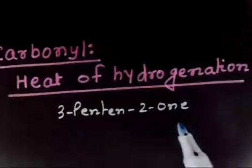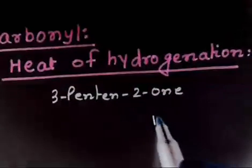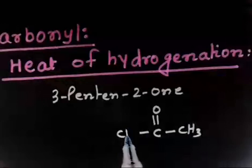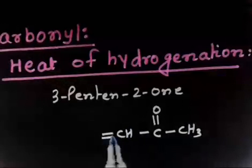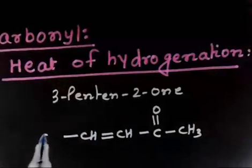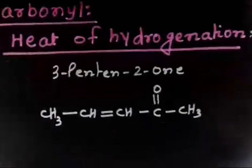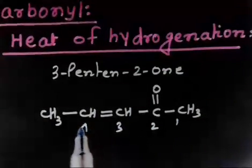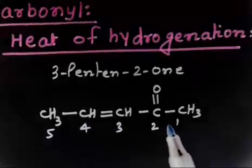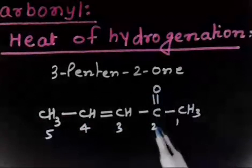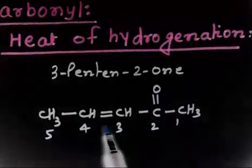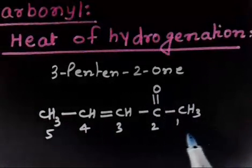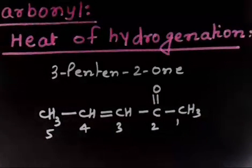Let us write down the structure of 3-pentine-2-one: CH3, C double bond CH, then CO, then CH3. So this is 3-pentine-2-one — carbons 1 through 5, with a ketone group at position 2 and a double bond at position 3.